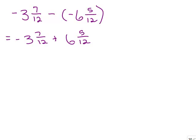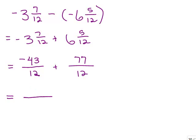Now we're adding a negative and a positive. We can keep the mixed numbers or change to improper fractions — let's try improper fractions first. They both have a common denominator. For the first number it's negative: 12 times 3 is 36 plus 7 is 43, so the numerator is negative 43. The next one is positive: 12 times 6 is 72 plus 5 is 77. Now I have a common denominator.